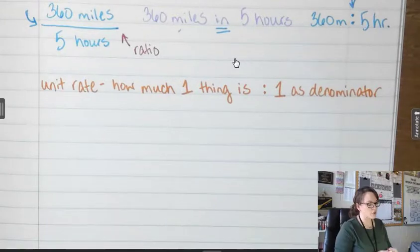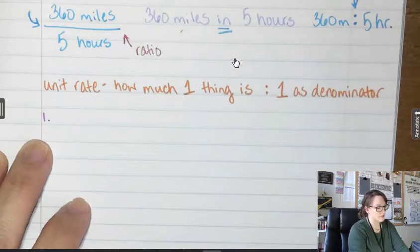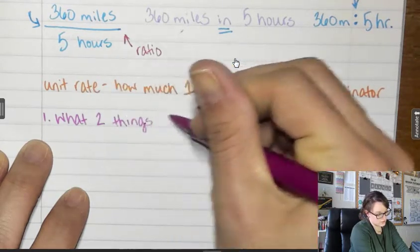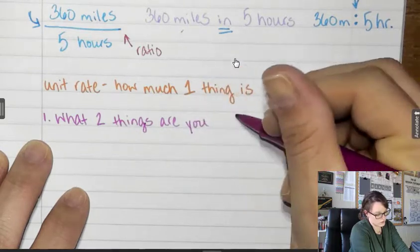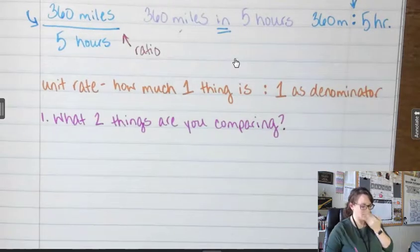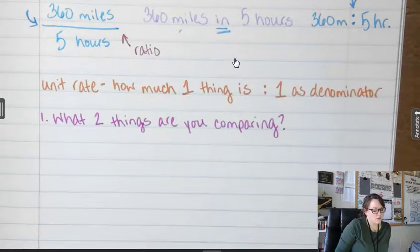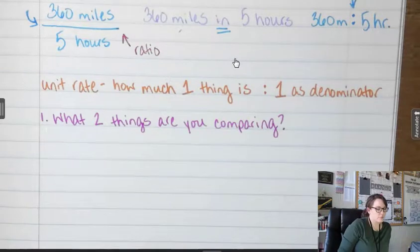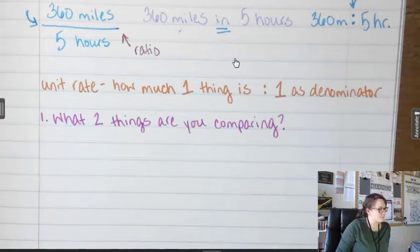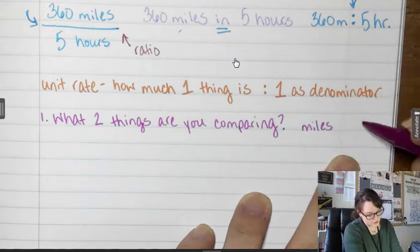So how do we figure out how much one thing is? Well, it's pretty simple. First thing you're going to do is figure out what two things you're comparing. What two things are you comparing? So with my example, driving to Amarillo, what two things am I comparing? Yes, miles to hours. So I am comparing miles and hours.